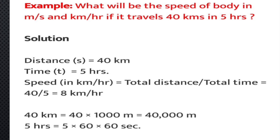To convert to meters per second: 1 km equals 1000 meters, so 40 km equals 40,000 meters. 5 hours equals 5 into 60 into 60 seconds. Therefore speed equals 40,000 divided by 5 into 60 into 60, which equals 2.22 meters per second.